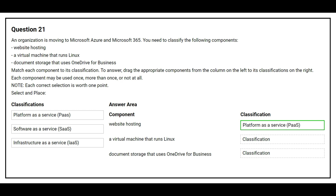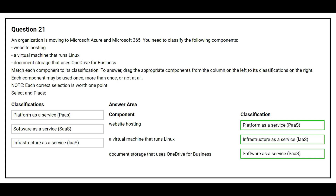The second component is a virtual machine that runs Linux. The correct classification is Infrastructure as a Service. The third component is document storage that uses OneDrive for Business. The correct classification is Software as a Service.